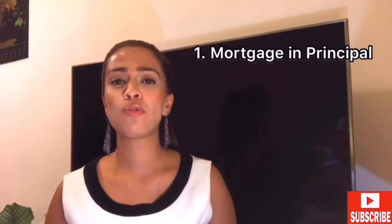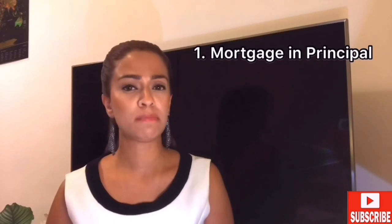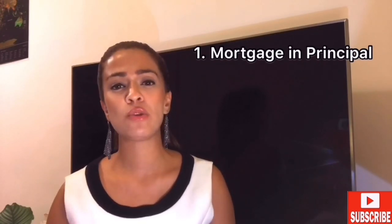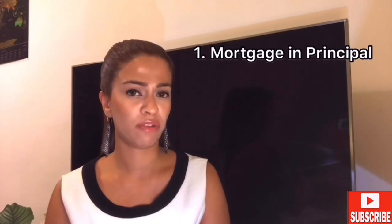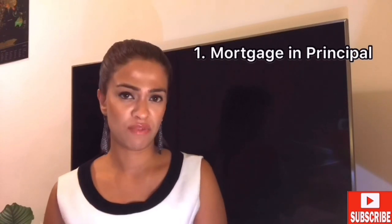Number one, get a mortgage in principle. Approach the bank and let them know you want to buy a property, and they will evaluate how much they're willing to offer based on the LTV ratio — loan to value ratio. The bank will normally lend you 90% LTV and you'll have to pay 10% as a down payment, depending on the country you live in.